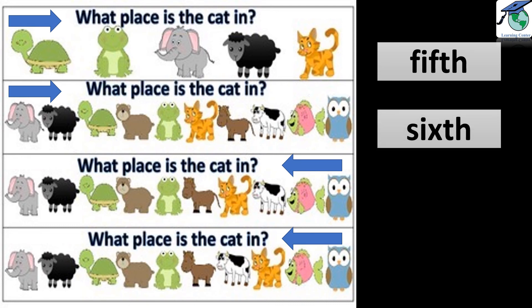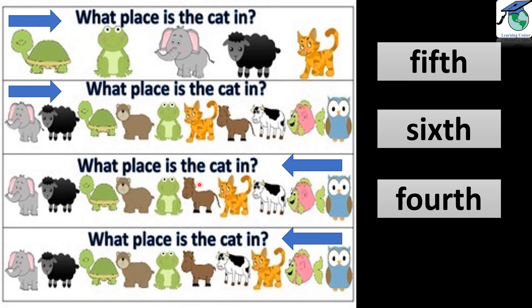Now, what place is the cat in? We will start from here, from the right side. First, second, third, fourth — yes, the cat is on the fourth place. What place is the cat in? From the right side: one, two, three — the cat is in the third place.